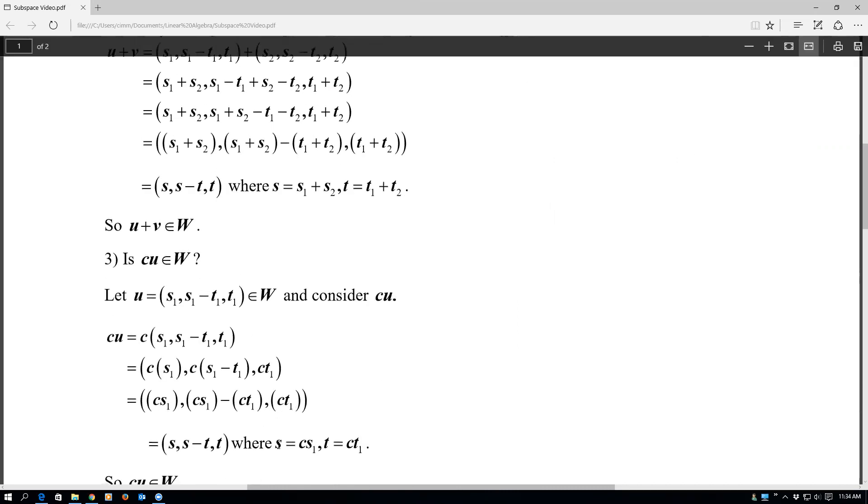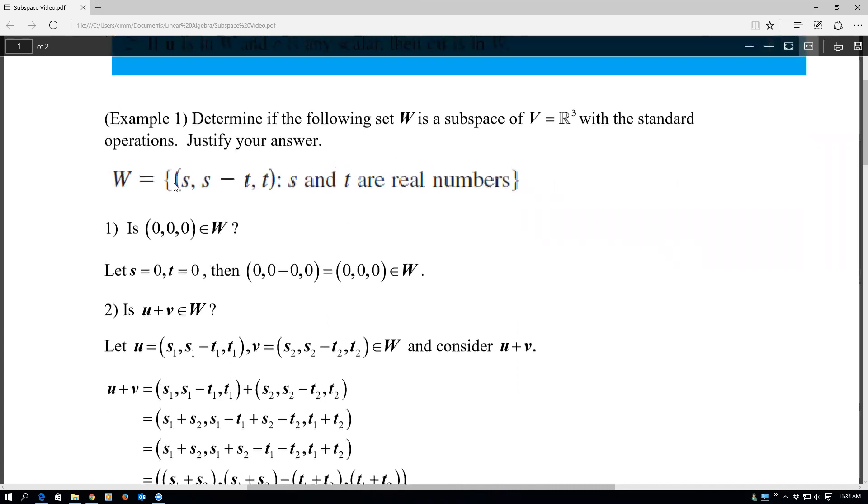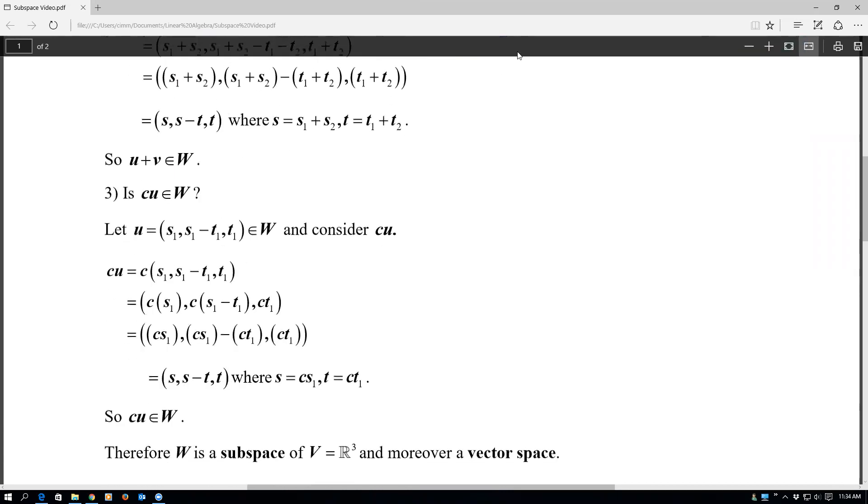And in the end, if I let S equals CS₁ and T equals CT₁, and I can do that because they're just real numbers, then again we have this exact same form that we started out with right here at the start.